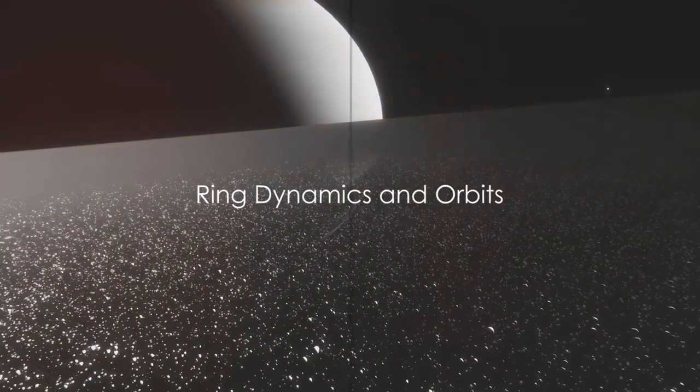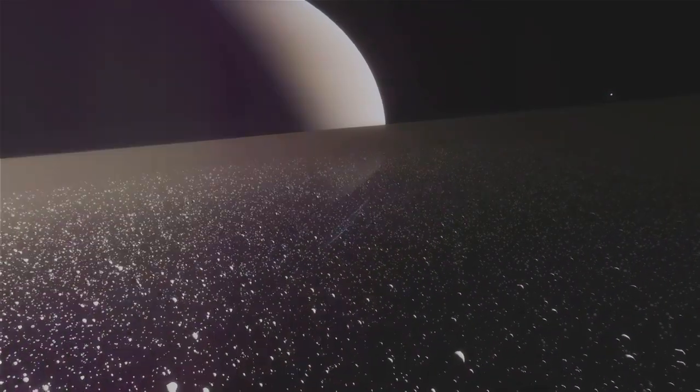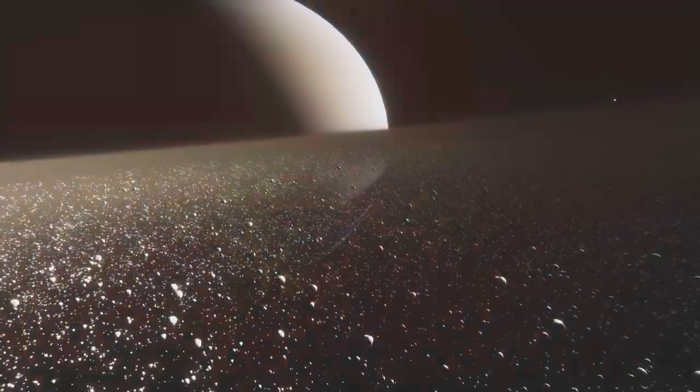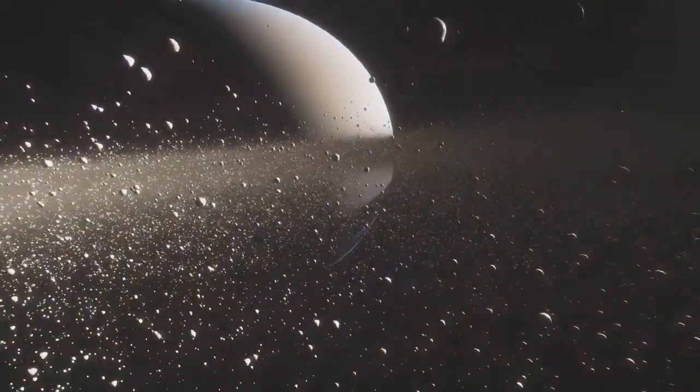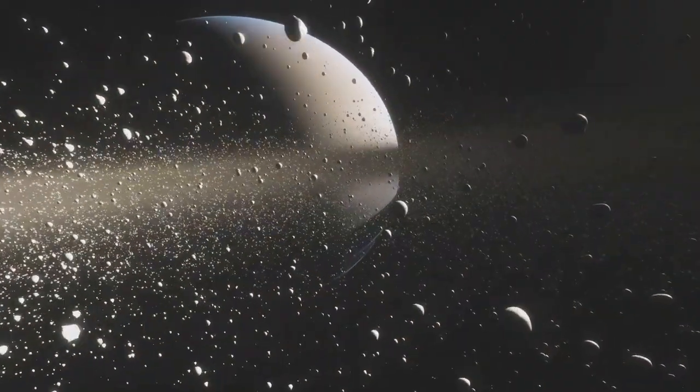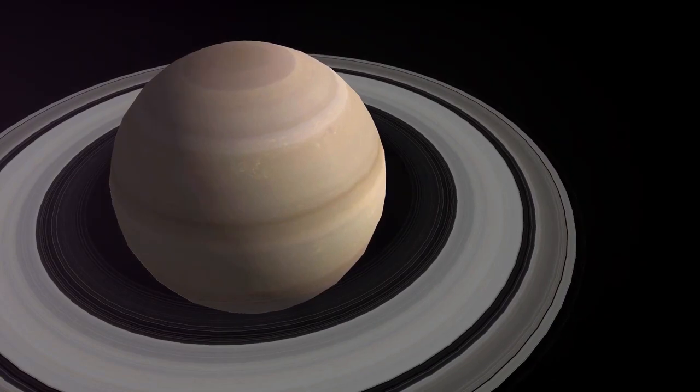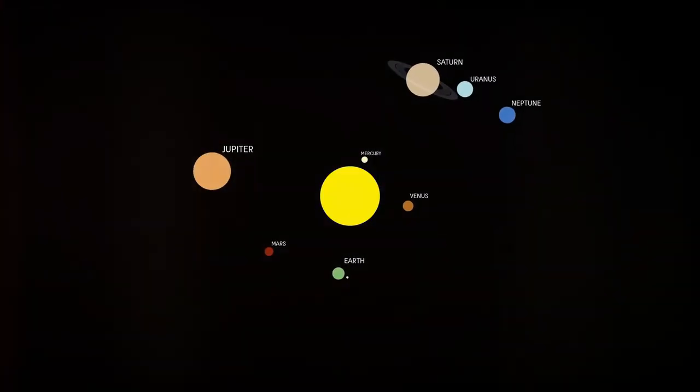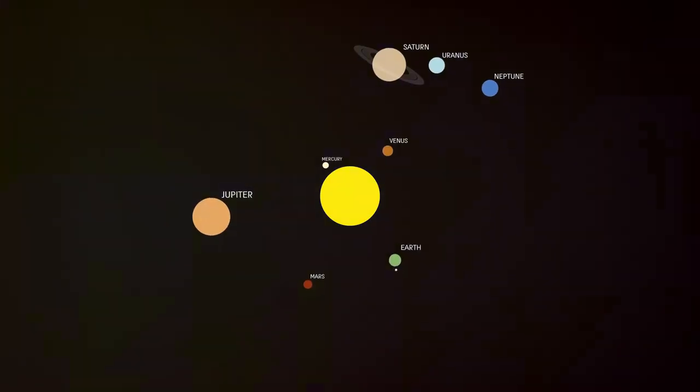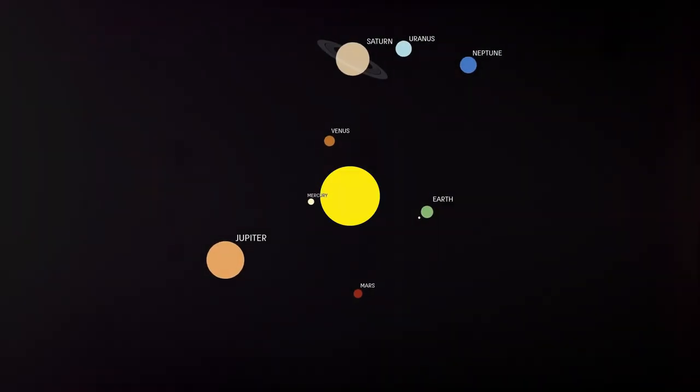The dance of the rings around their parent planets is a spectacle governed by gravity and intricate dynamics. Picture the ballet of ice, dust, and rock particles as they orbit their host planets. This dance isn't random, it's governed by the fundamental force of gravity. Each particle in the ring system is in its own orbit, just like our Earth orbits the Sun.